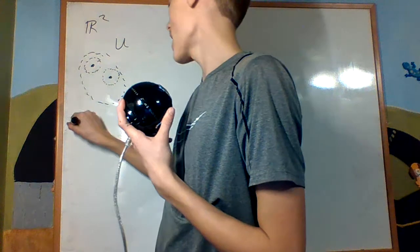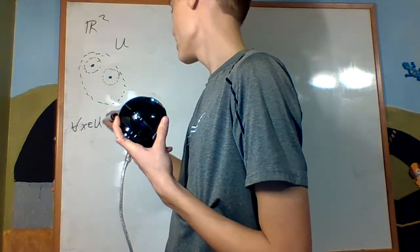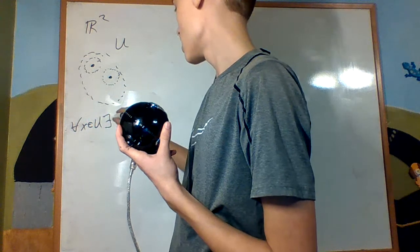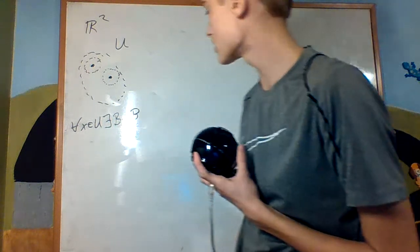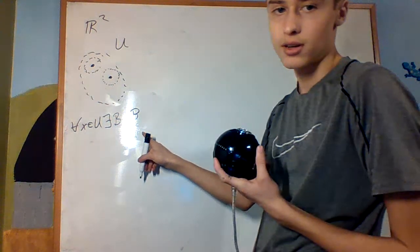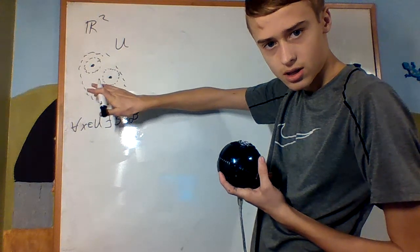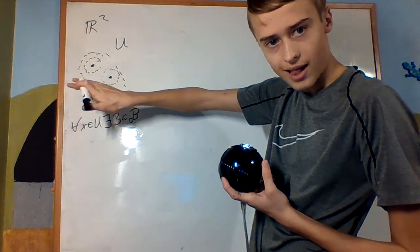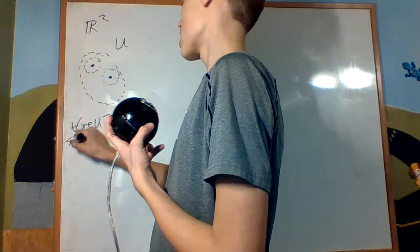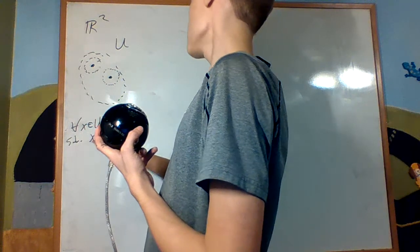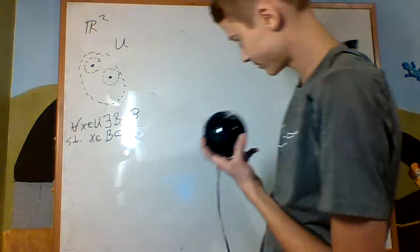Let's write this out. For every x, an element of U, there exists B, an open ball — so B is an element of B, where B is the set of open balls — such that x is an element of that ball B, and B is a subset of U.